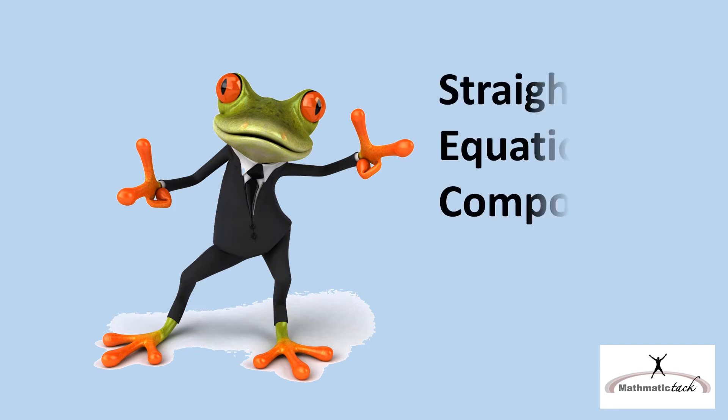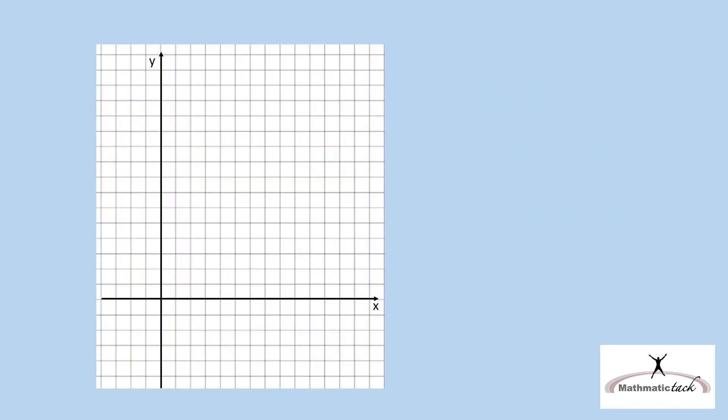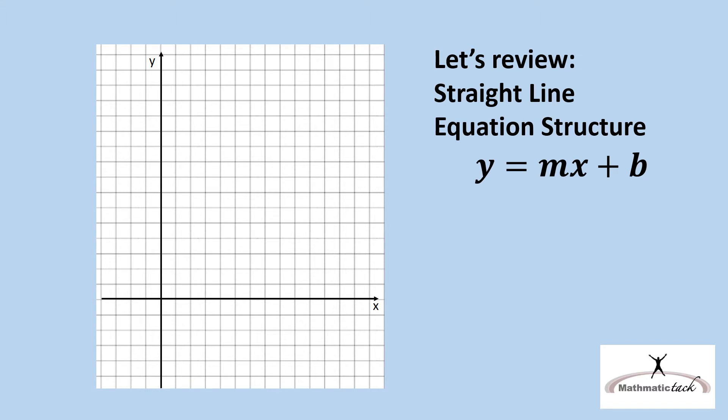Hello, today we will be learning about straight line equation components. Let's review the straight line equation structure: y equals mx plus b, where m represents the slope of the line, and b represents the y-intercept where the line crosses the y-axis.